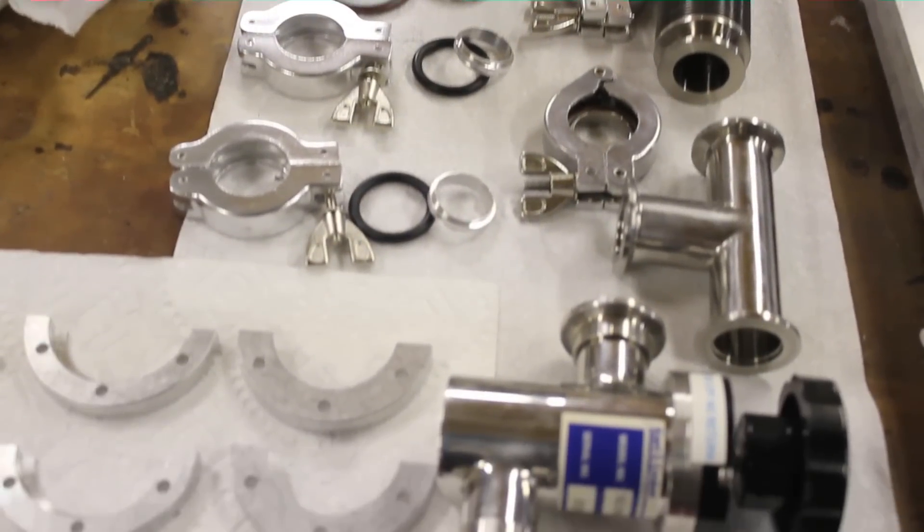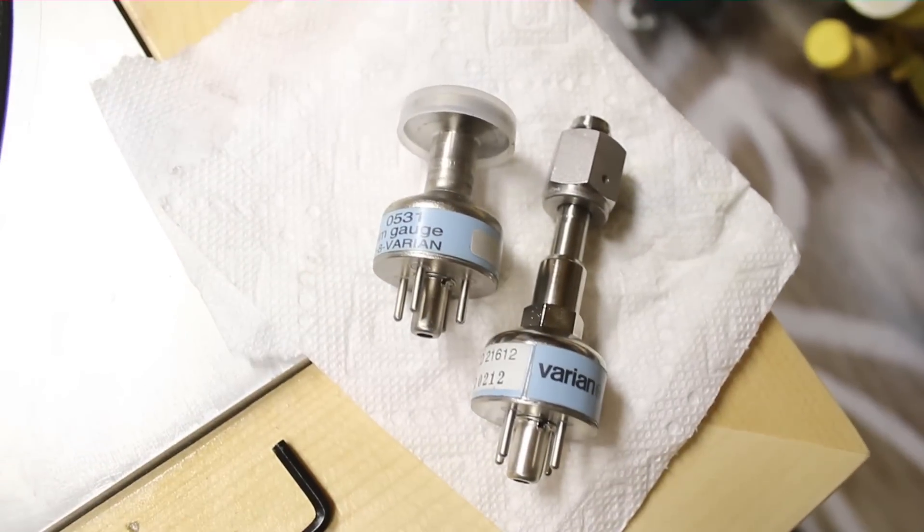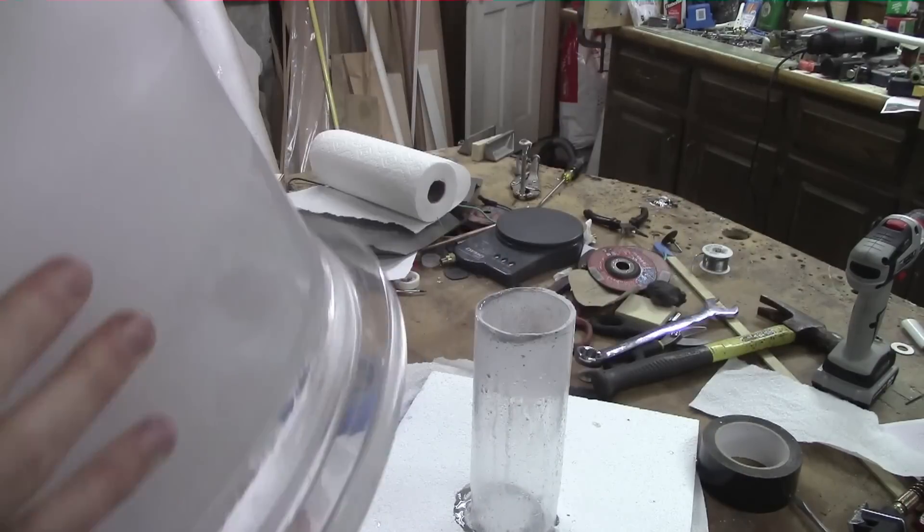I got a bunch of high vacuum parts including KF25 bellows and a couple valves. An Alcatel penning gauge and a Varian thermocouple gauge. I also got a huge bell jar which was super thick but wasn't even clear. I also had to cut a tube out of the middle with a diamond wheel. The top was super bumpy too so I can't even use a cap.